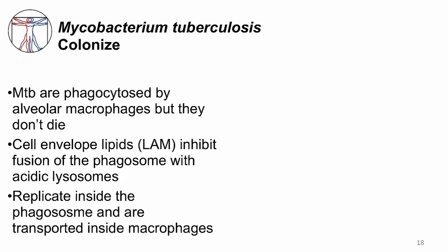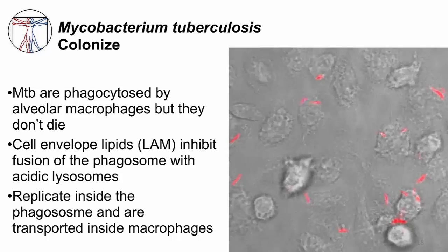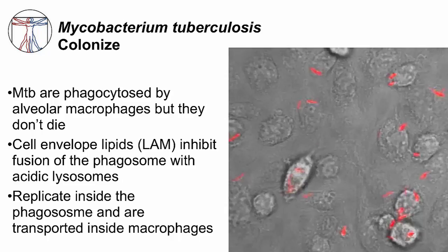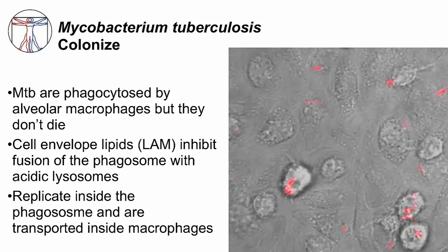Phagolysosome fusion is a necessary step for the macrophage to kill MTB. Once MTB is safely in the phagosome of the macrophage, it can replicate there. It can also use the macrophage as a transporter to other areas of the lung or other parts of the body. Here's a video of macrophages infected with M. tuberculosis, which are the red-colored bacilli. The macrophage is unable to kill them, and the mycobacteria are surviving within it.